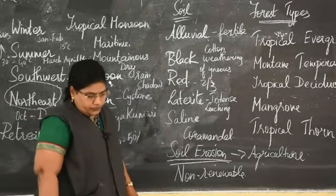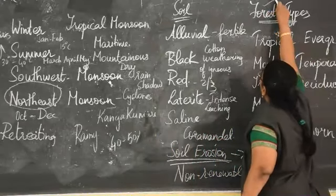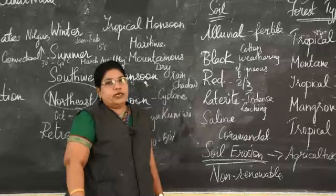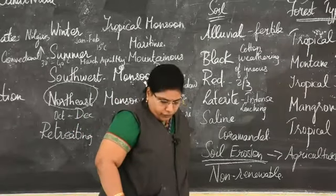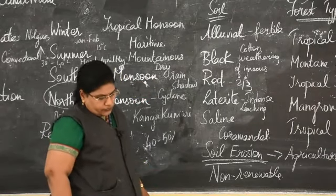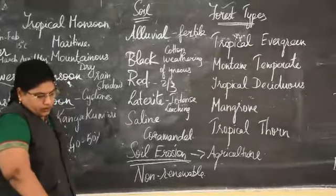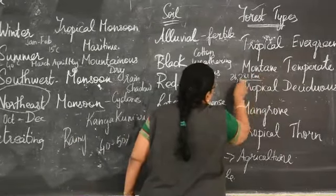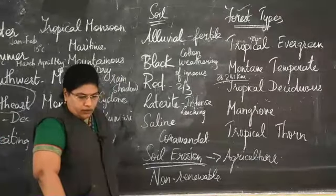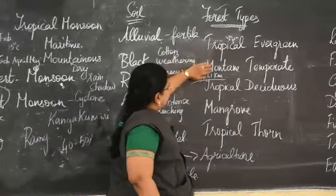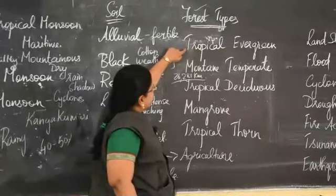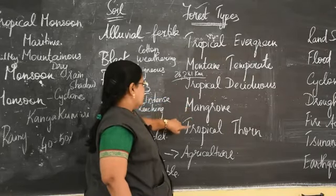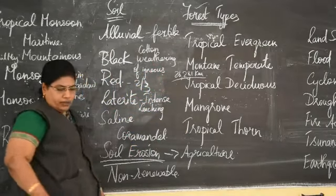Natural vegetation in Tamil Nadu refers to all the forest cover we have. We have hills and mountains, so a wide variety of fauna and flora are found in Tamil Nadu. The total forest cover of Tamil Nadu is nearly 26,281 square kilometers according to the Tamil Nadu State of Forest report. Forest types in the state are classified into tropical evergreen forest, mountain temperate forest, tropical deciduous forest, mangrove forest, and tropical thorn forest.